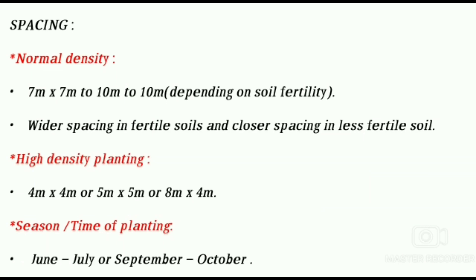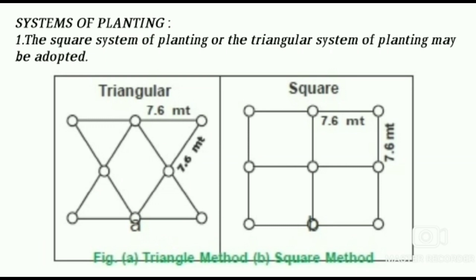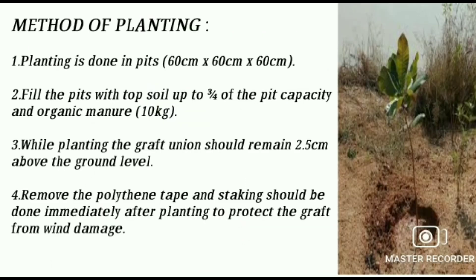Spacing: Normal density is 7m × 7m or 10m × 10m depending upon soil fertility — wider spacing in fertile soils and closer spacing in less fertile soils. High density planting is 4m × 4m, 5m × 5m, or 8m × 4m. Season of planting is June to July or September to October. Square or triangular system of planting may be adopted. Planting is done in pits of size 60 cm × 60 cm × 60 cm. The graft union should remain 2.5 cm above the ground level.